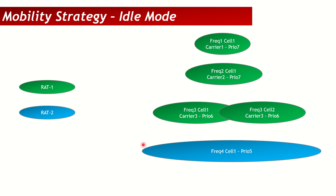If you're looking at a 4G/3G mobility strategy, then the green ones are LTE cells while the blue one is a 3G or 2G cell. The idle mode mobility concept is similar for 5G and 4G, so this knowledge applies to both networks. Each layer here is a different frequency — cell 1 on frequency 1, and cell 1 on frequency 2, making them two inter-frequency cells. Both currently have priority 7.